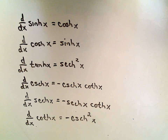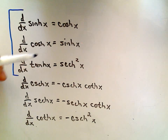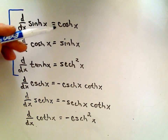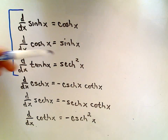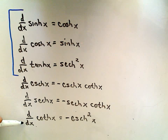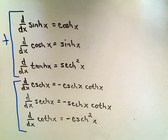Notice if you take the derivative of hyperbolic sine, cosine, or tangent, the answers are all positive. If you take the derivative of hyperbolic cosecant, secant, or cotangent, all of those have negatives associated with them.